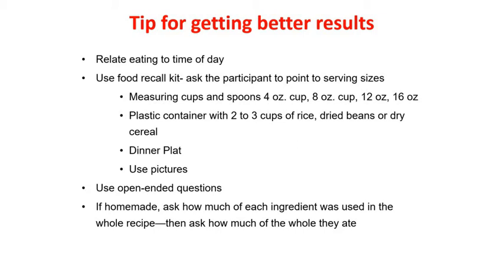Tips for getting better results: relate eating to the time of day, as we saw previously — what was consumed at breakfast, lunch, dinner, and in between meals. Use a food recall kit so participants can point to serving sizes. Keep cups, spoons, plates, and glasses in view and compare the portion size which participants consumed with those plates and bowls. Use pictures to estimate serving sizes. Use open-ended questions — not closed-ended questions — where participants give you details rather than just answering yes or no.